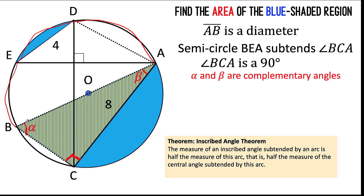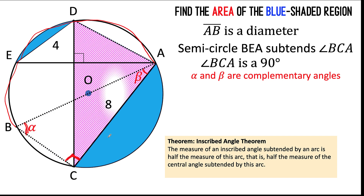This means that the measure of alpha is one-half the measure of arc AC. Now let's look at triangle CDA. Notice that this inscribed angle here is also subtended by the same arc AC. So since these two angles are subtended by the same arc AC and the first angle measures alpha, this angle here must also be alpha. They have the same measurement because they are subtended by the same arc AC.